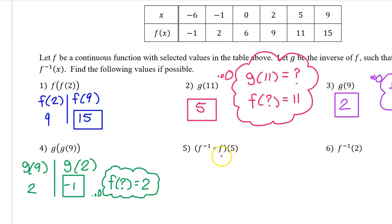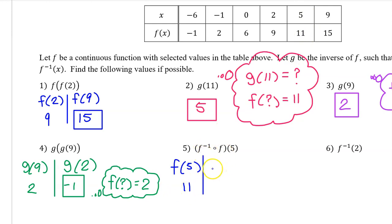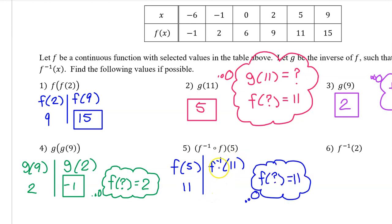Number 5: with the open circle notation, we work from right to left. So we begin by evaluating f at 5. f at 5 is 11. Moving to the left, we next evaluate f inverse at 11. To evaluate f inverse at 11, you ask yourself, f at what equals 11? f at 5 is 11. So that's the answer.